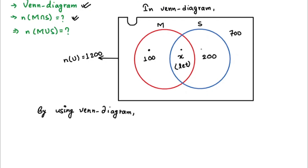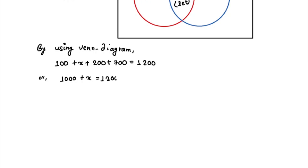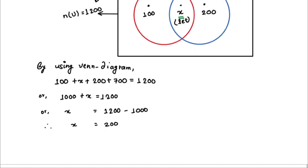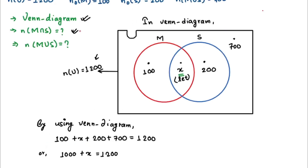Using the Venn diagram, when we add all four regions we get the total of 1200. So: 100 + X + 200 + 700 = 1200. Solving this: 100 + 200 + 700 = 1000, so 1000 + X = 1200, which gives X = 1200 − 1000 = 200. Since X represents students who like both subjects, N(M ∩ S) = 200. So 200 students like both subjects.